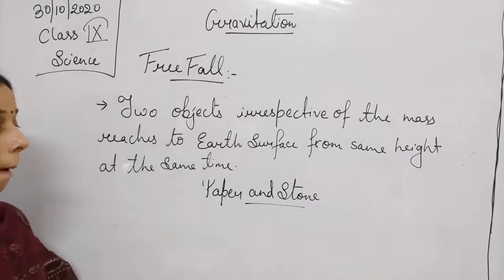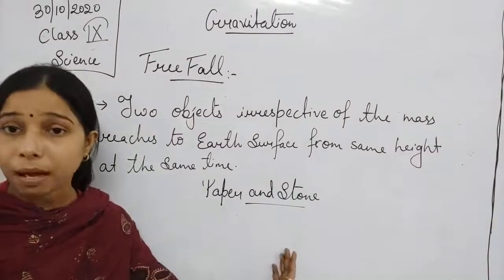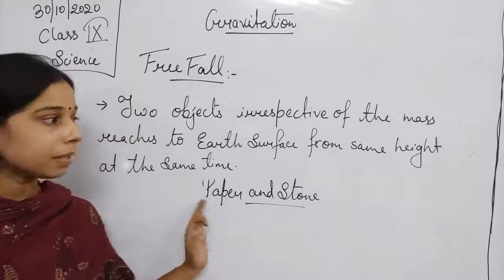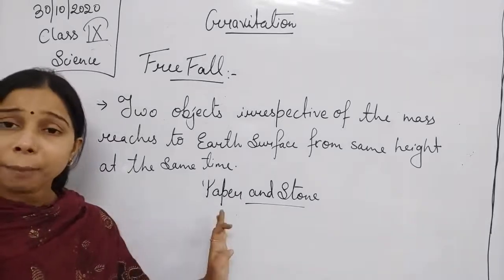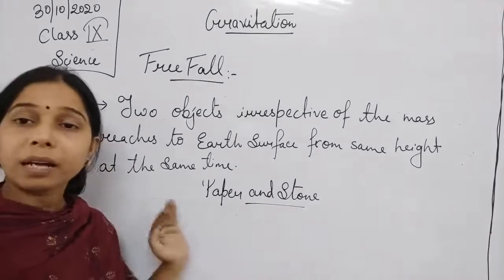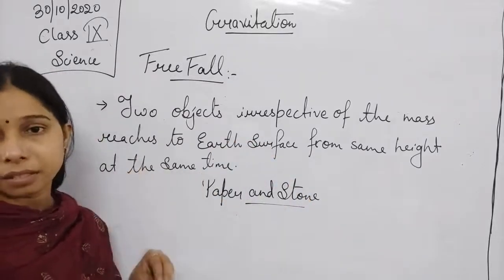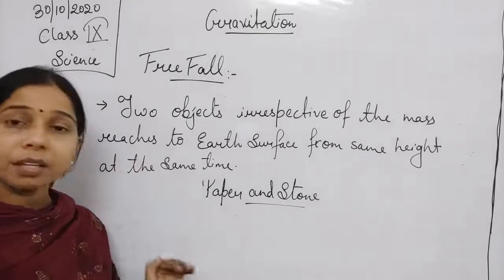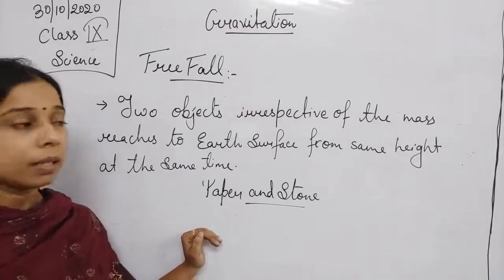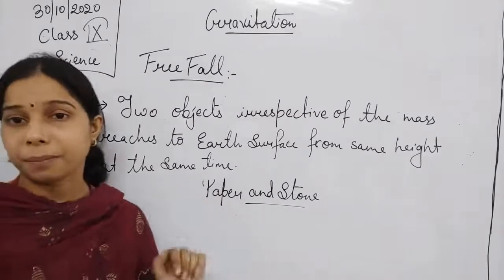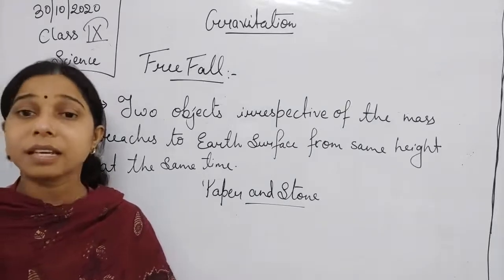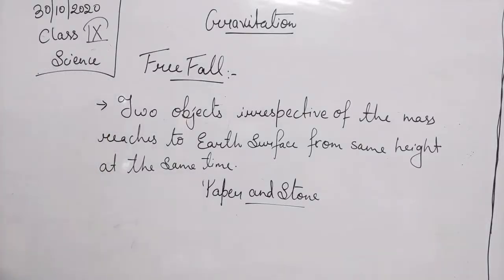If we take the experiment in a vacuum instead of air, in the vacuum if you take the paper and stone, or the feather and coin, and drop them from a certain height, you will observe that the feather and coin reach the surface at the same time — same thing happens with paper and stone. It is because of air resistance that there is a change in acceleration; otherwise, acceleration does not depend upon the mass of the object.